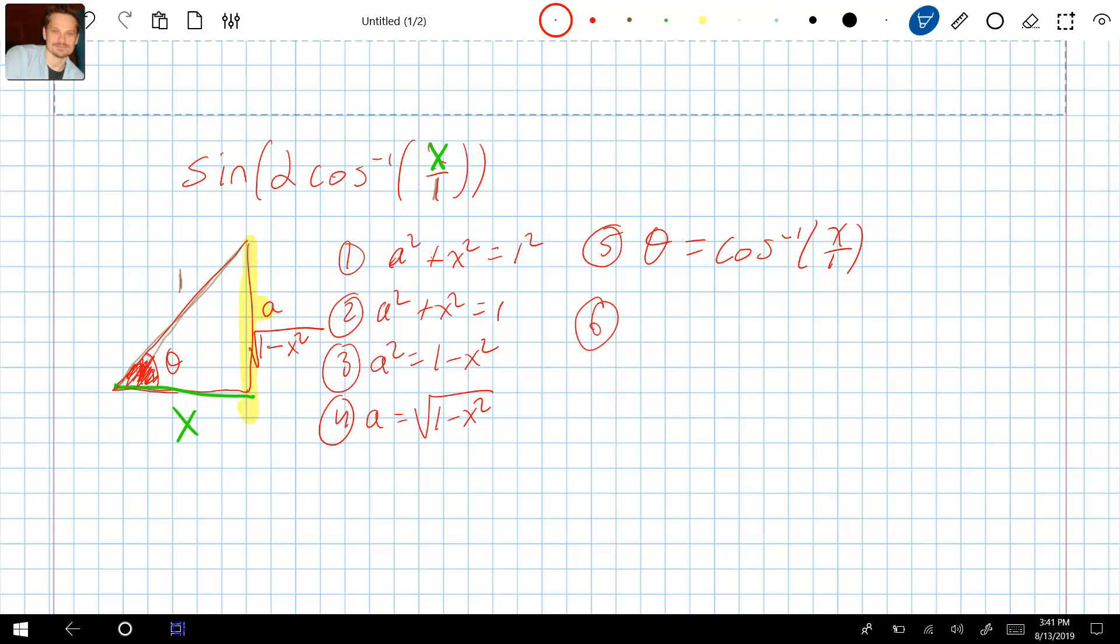So I can now rewrite the original, which I'm going to call step 0. I'm going to call that now sine of 2 times theta. I'm replacing cosine inverse with theta.